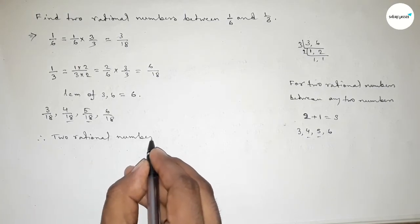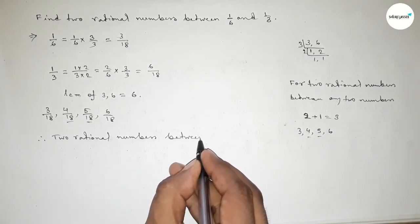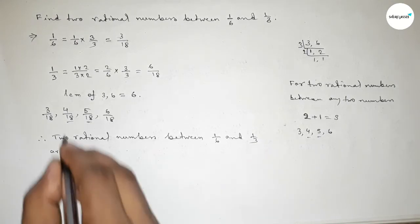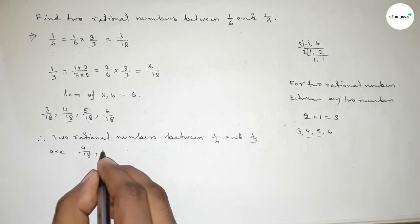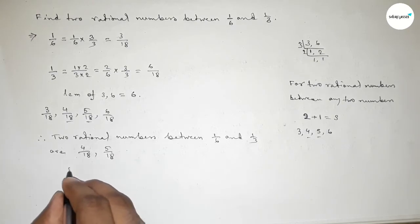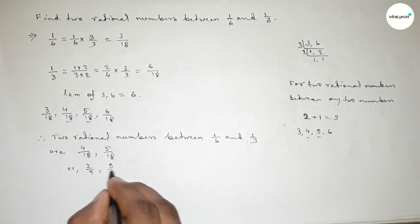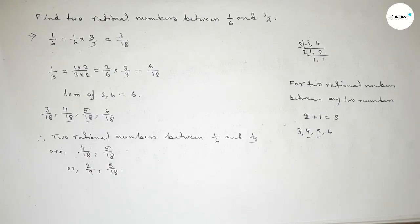Therefore, the two required rational numbers between 1 over 6 and 1 over 3 are 4 over 18 and 5 over 18. Or we can write if we divide both numbers by 2, then we can write 2 over 9 and this is 5 over 18. So that's all, thanks for watching, please share it with your friend.